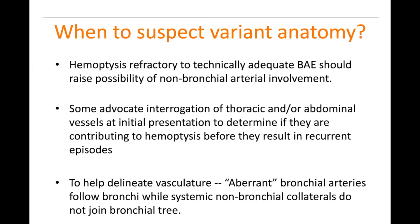So when do you suspect variant anatomy? Either you interrogate everything — doing aortograms with your catheter up near the aortic arch, filling intercostal arteries, checking all thoracic and abdominal aortic branches for anything aberrant leading to the lungs — or, as in the prior case, when the patient has a technically successful bronchial artery embolization but then continues to bleed.